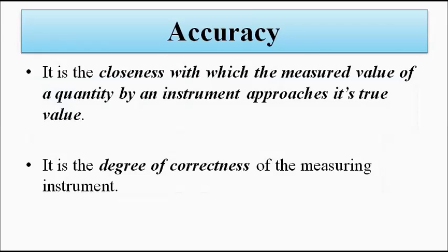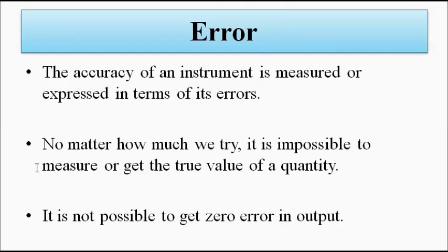Just a quick recap: the accuracy of a measuring instrument is defined as the closeness with which the output of the instrument — the measured value of the quantity or parameter — approaches the true value. It is the degree of correctness of the measuring instrument. When we discuss accuracy we have to discuss error, because it is because of error that we discuss accuracy.